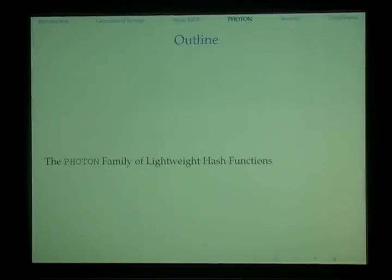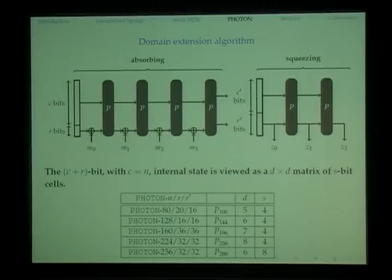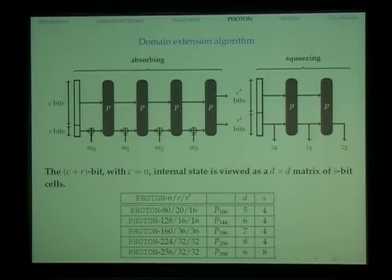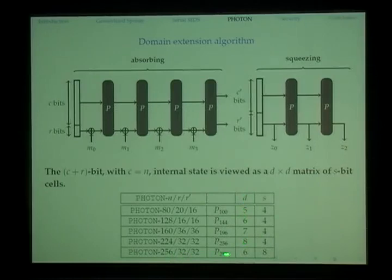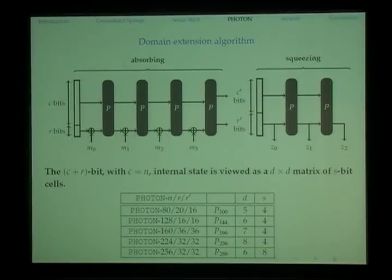Here are the details of the Fontan family. The state is viewed as a d × d matrix of s-bit cells. We have five variants of Fontan ranging from digest sizes of 80 to 256 bits. For the first four variants s equals 4, with dimension from 5 to 8. The last variant has s equals 8 with dimension 6. One might ask why we don't have dimension 9 with s=4 — we tried but failed because no such MDS matrix exists, so we had no choice but to choose a larger s.